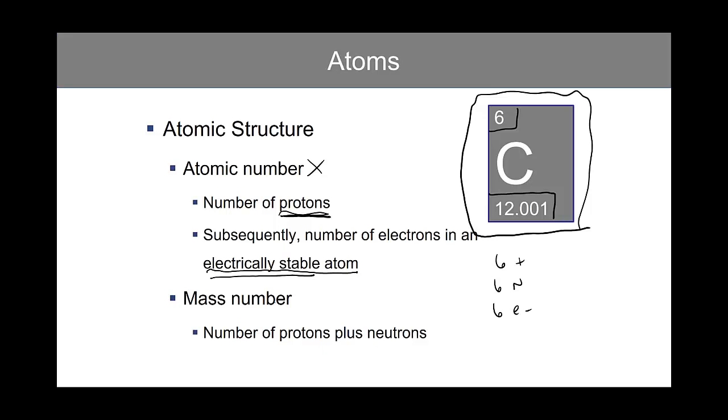The mass number is the number of protons plus neutrons, and that's the larger number of the two.